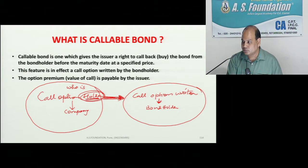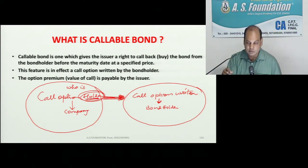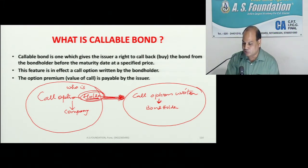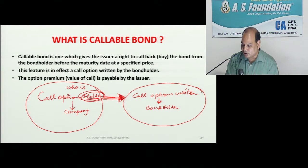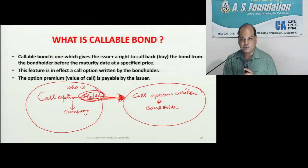This is a little complicated because we are dealing with two options in one bond — there is a conversion option and a call option on top of that. The call option holder is the company and the call writer is the bond holder. The holder pays premium to the option writer — that premium is inbuilt into the price of this bond. Only that much fine-tuning needs to be done; the rest is the same.